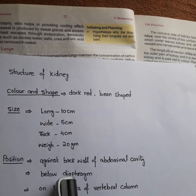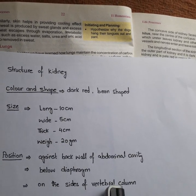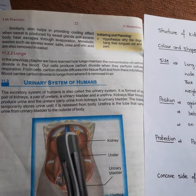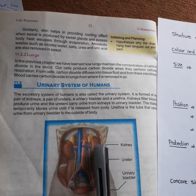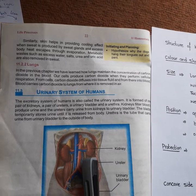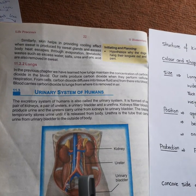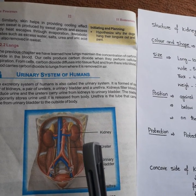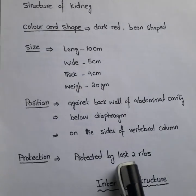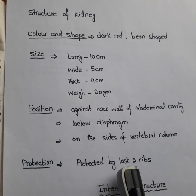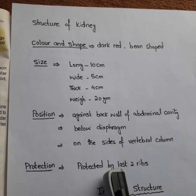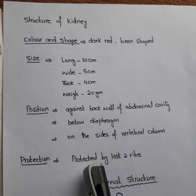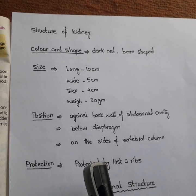As you can see in the diagram, this is the back wall of the abdominal cavity. It is present below the diaphragm and on both sides of the vertebral column. The thing that protects the kidney is the last two ribs of your rib cage — the last two ribs protect the kidney.